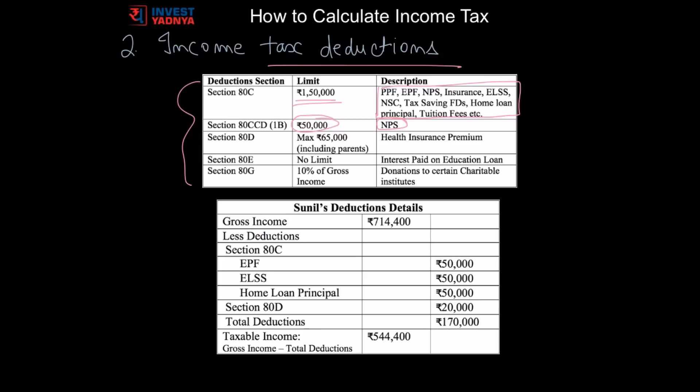Now for our Sunil's example, let's assume Sunil has invested Rs 50,000 in employee provident fund, Rs 50,000 in tax saving mutual fund also called as ELSS, and Rs 50,000 he has paid back his home loan principal payment in the financial year under consideration. Let's also assume he has taken health insurance which has premium of Rs 20,000 per year. So total deduction for Sunil is Rs 1.7 lakhs which should be reduced from his gross income for tax calculation, and therefore his taxable income becomes this much.